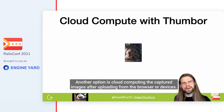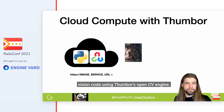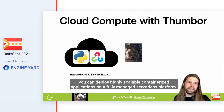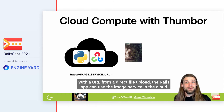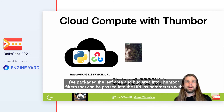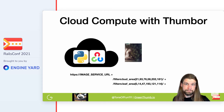Another option is cloud computing the captured images after uploading from the browser or devices. I like to use Thumbor, which is a Python image service that can be extended with our computer vision code using Thumbor's OpenCV engine. Computer vision code is deployed to Google Cloud Platform's Cloud Run service, where you can deploy highly scalable containerized applications on a fully managed serverless platform using Docker. With a URL from a direct file upload, the Rails app can use the image service in the cloud and provide users with processed image URLs.